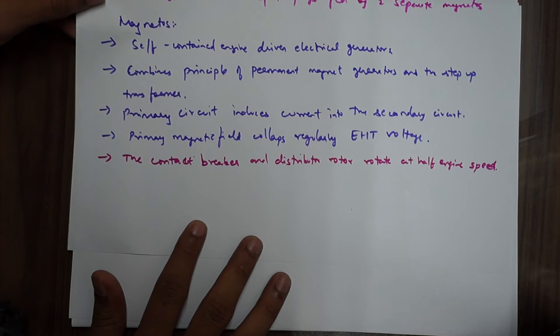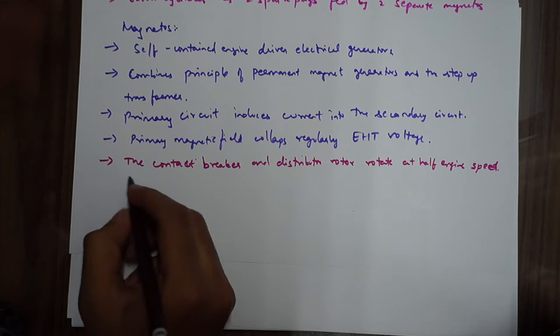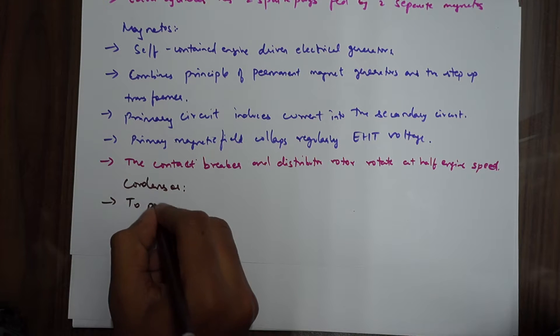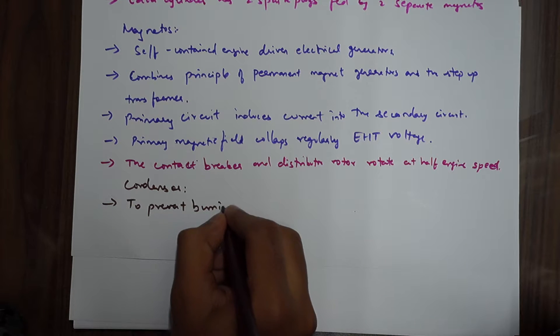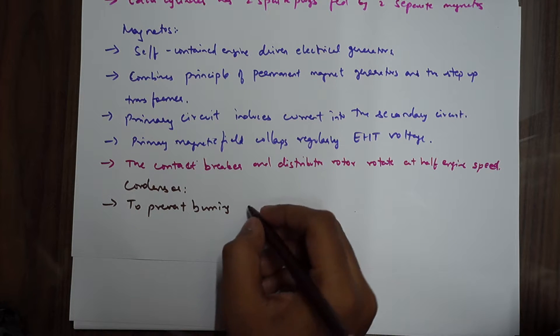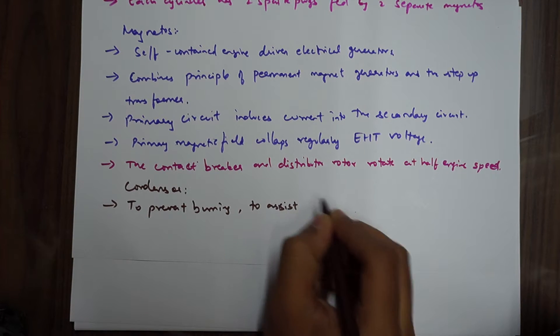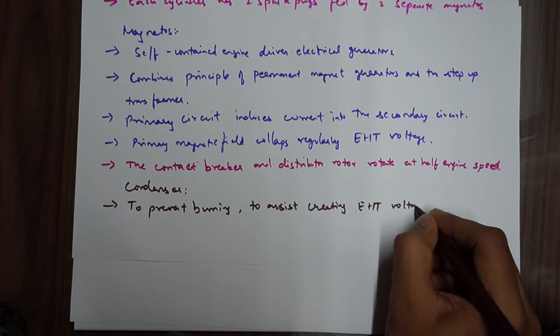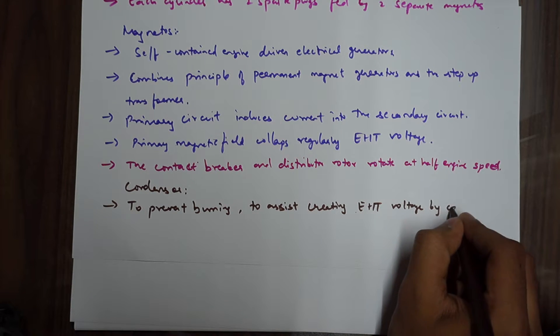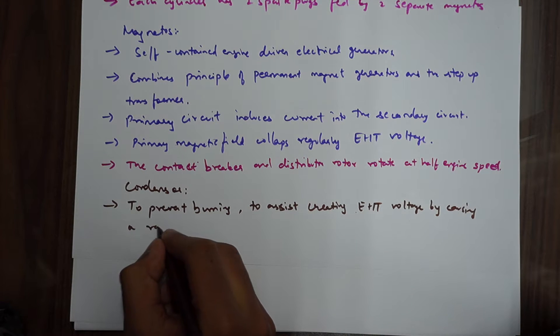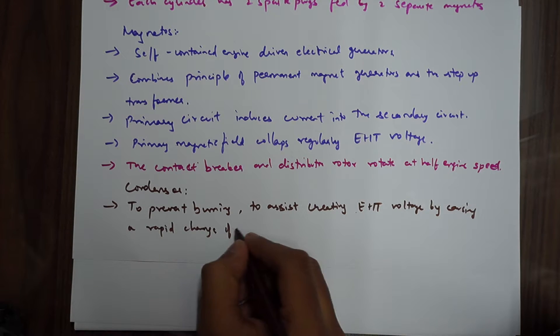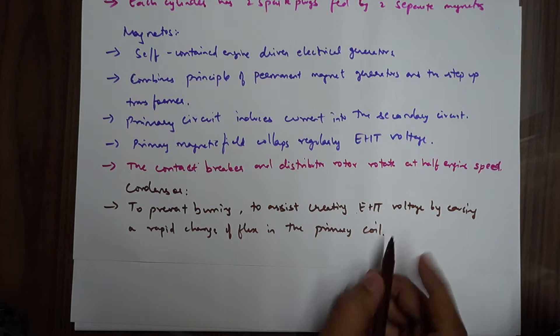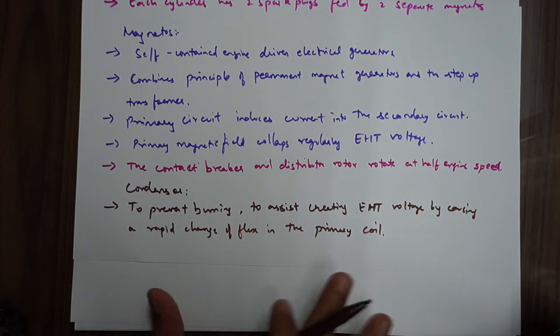Now there's something called as a condenser. The condenser, its function is to prevent burning across the contact breaker and to assist in creating the extra high tension voltage in the secondary circuit, by causing a rapid change of flux in the primary coil. These terms may seem a little new and everything, but it's actually not required as such. You just need to understand what are the functions of these.